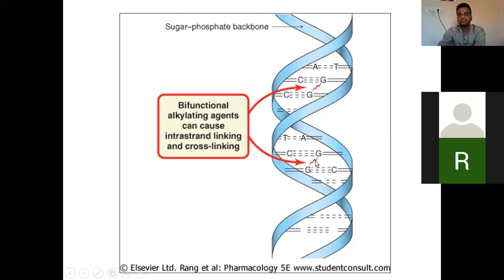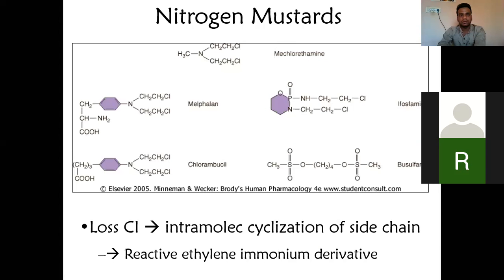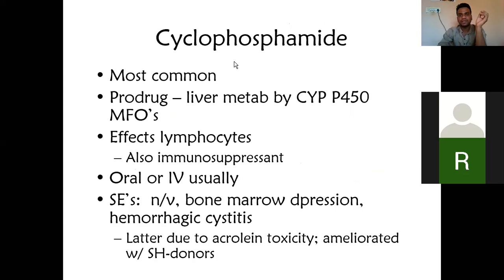Interstrand cross-linking also occurs, and because of that the DNA cannot replicate or transcribe. The alkylating agent nitrogen mustard works by losing a chloride ion, which causes intramolecular cyclization of the chain. This forms a reactive ethyleneammonium derivative, which reacts with the material of the cancer cell, and the cancer cell dies.